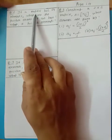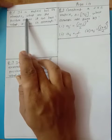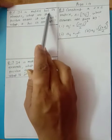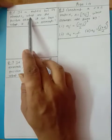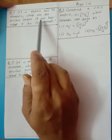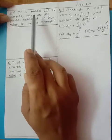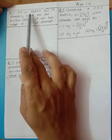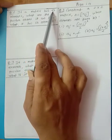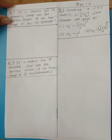If a matrix has 24 elements, what are the possible orders it can have? And if it has 13 elements, then what matrix order can it be?